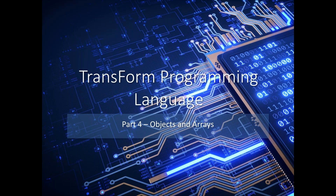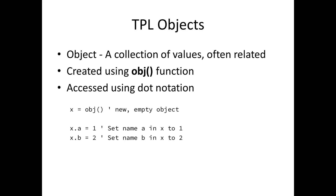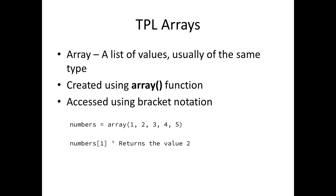Objects and arrays are data structures — a special data type that can contain a lot of different values. These two data structures have two distinct features. The first one, objects, is a collection of values. Values are usually related but sometimes it's just a collection of random values. They're created using the object function in TPL and accessed using what is called dot notation. In this example, I've got an object called x that's empty, and I add two properties to it: a assigned to one, and b assigned to two.